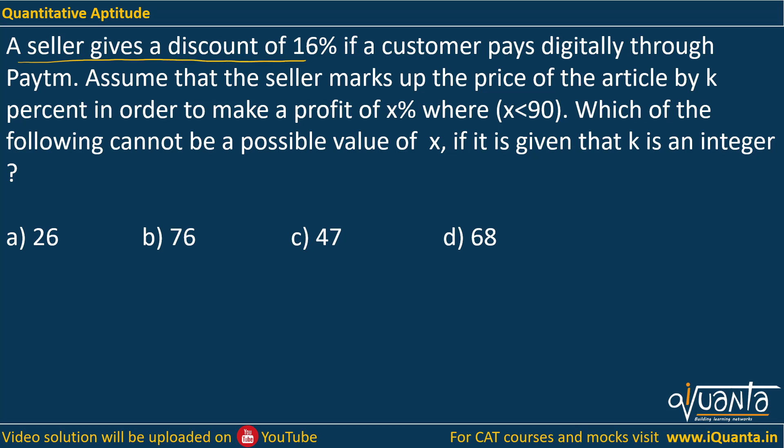A seller gives a discount of 16% if a customer pays digitally through Paytm. Assume that the seller marks up the price of the article by k percent in order to make a profit of x percent where x is less than 90. Which of the following cannot be the possible value of x if it is given that k is an integer?